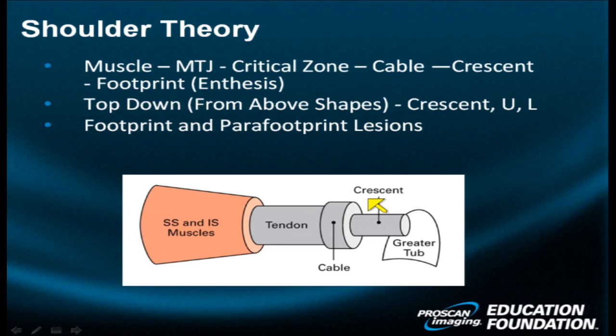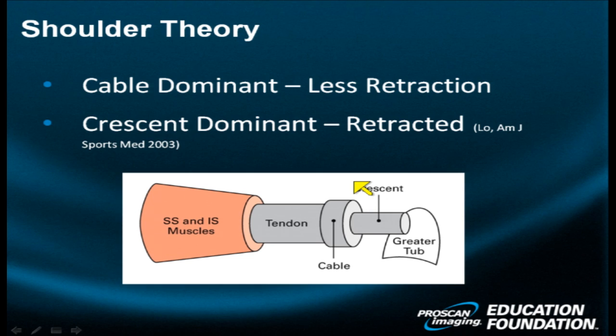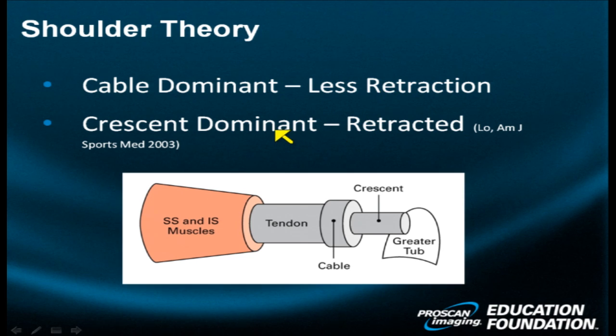When you look from the top down, many have described the shape of these tears as either crescent-shaped, U-shaped, or L-shaped. The shape depends on whether a shoulder is cable-dominant or crescent-dominant. In a cable-dominant scenario, because the cable is thick, strong, and fibrotic and restricts motion, there is less retraction. In a crescent-dominant shoulder, where the cable is thinner, there will be a greater degree of retraction and you are more likely to see a deeper U-shaped tear.